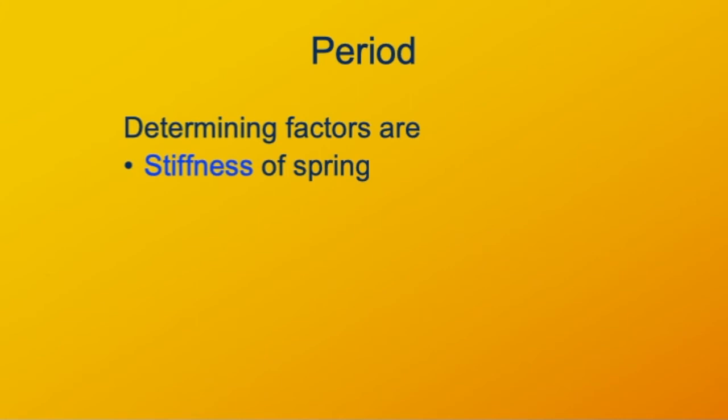So a very stiff spring will have a higher frequency of oscillation than a softer spring. The other important factor is the mass of the load. If you put a heavy mass on a spring, its oscillation will have a longer period, a lower frequency, than if you have a lighter mass on the same spring.